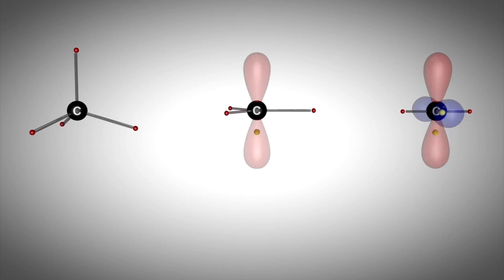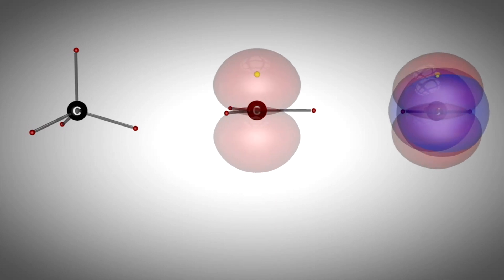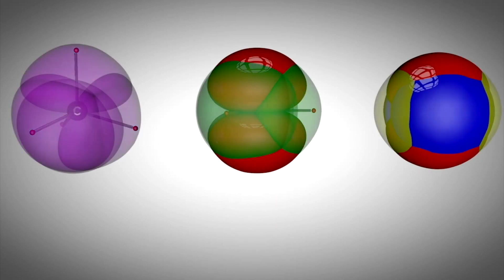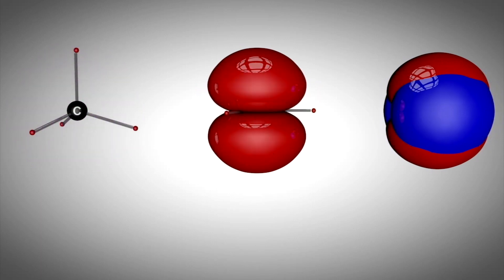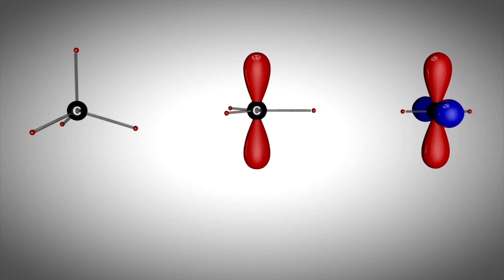Although we will use the abbreviated hybridized building blocks shown here for subsequent examples, it is important to recall the actual shape of the unhybridized and hybridized lobes on carbon that you have learned in previous classes.